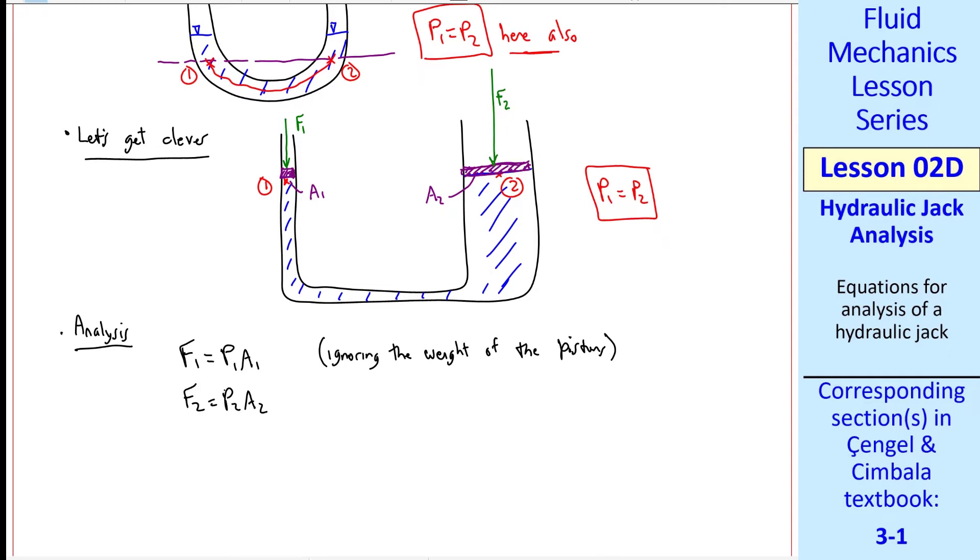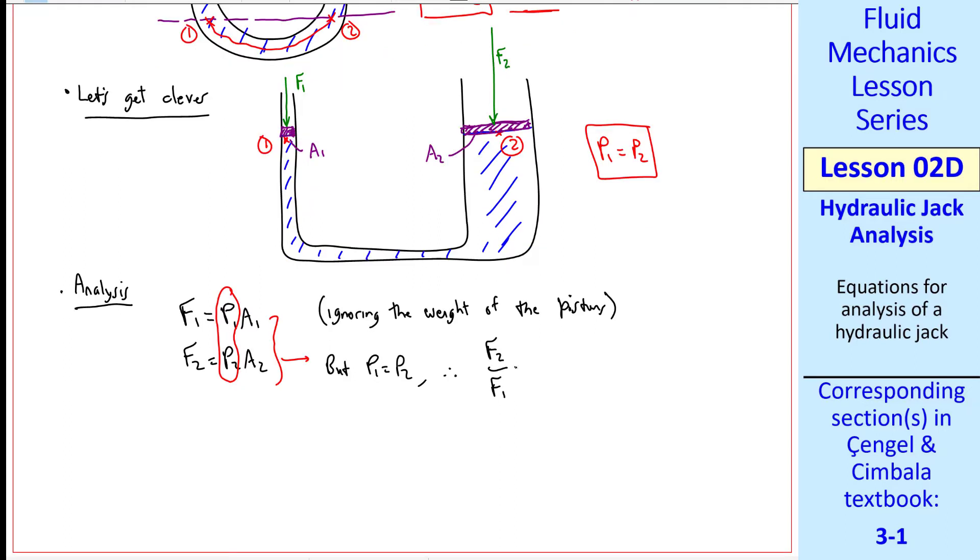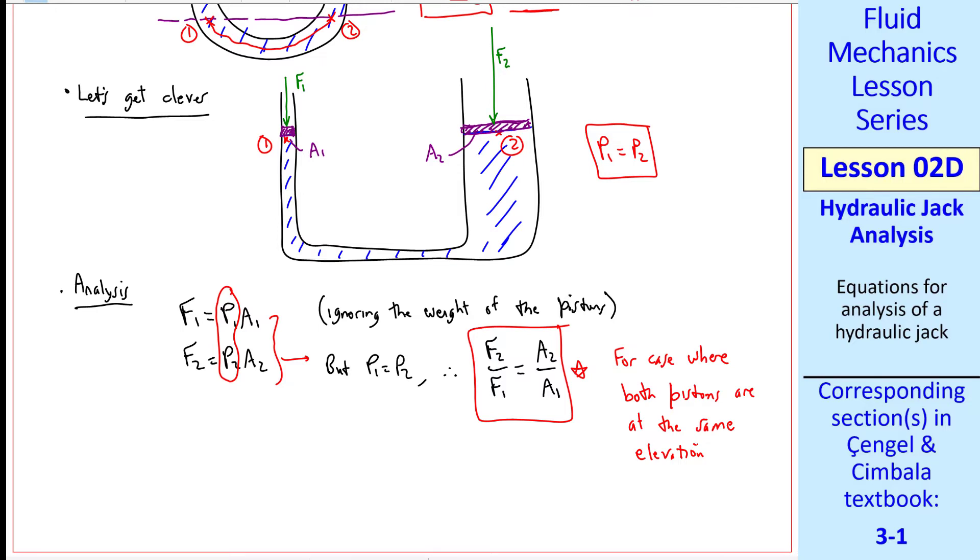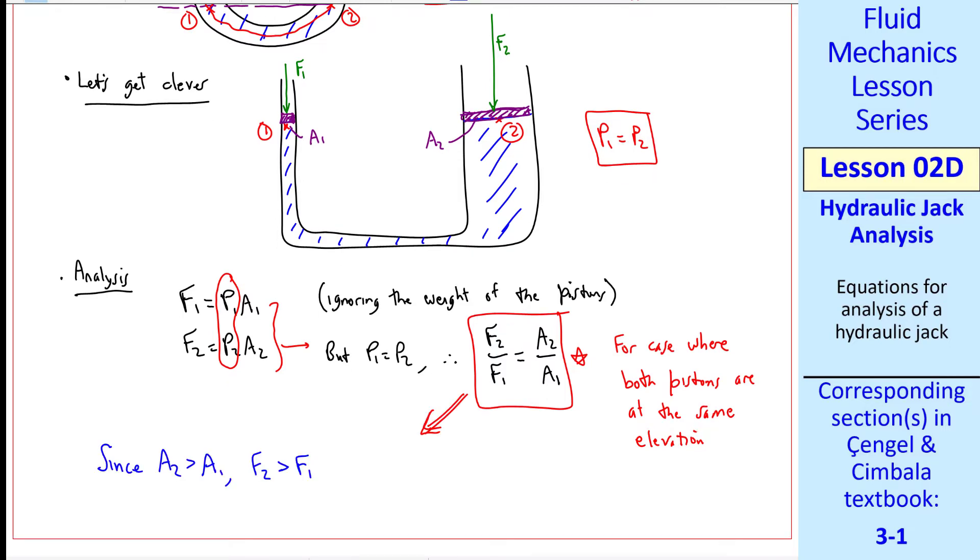But since P1 and P2 are equal, this equation becomes F2 over F1 equal A2 over A1. Keep in mind that this is for the case where the two pistons are at the same elevation as in our drawing. Hopefully you can see the application. Namely, since A2 is greater than A1, as in this diagram, F2 is greater than F1 because of these ratios. So by applying a small force here, you can support a large force here. And that's the concept of a hydraulic jack.